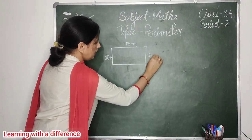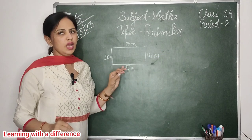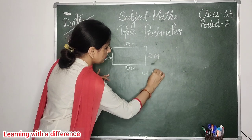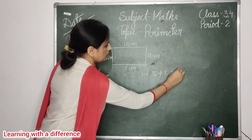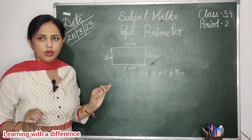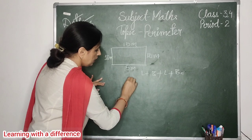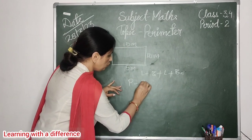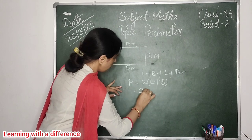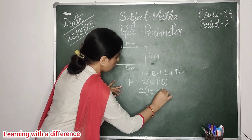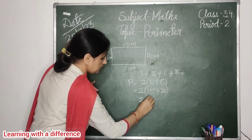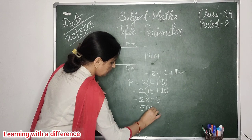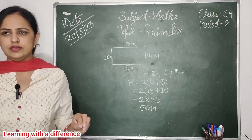Okay — 10 meters, 50 meters, right? हाँ, हम इनको add कर लेंगे — यह तरीका बिल्कुल सही है: length plus breadth plus length plus breadth। लेकिन आपने एक और चीज़ बताई — formula। Perimeter of a rectangle is equal to 2 times (length plus breadth). Length हो गया 15 plus breadth हो गया 10 — multiply करो — 25 — and it comes fifty meters। Very good, clear है ना?